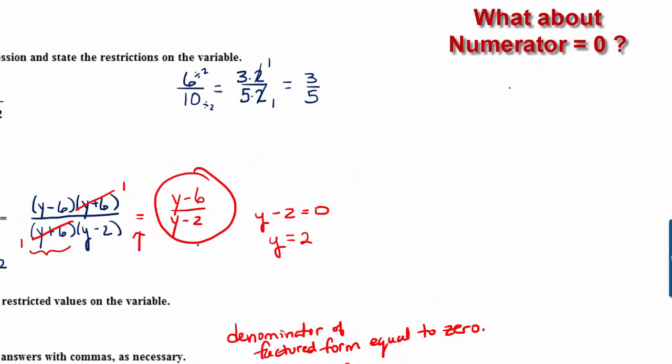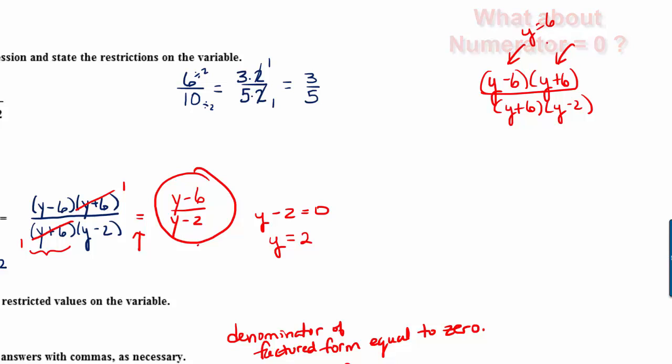As a side note, a common question that I get from students is when they see the expression y minus 6, y plus 6 over y plus 6 times y minus 2, they want to set each factor equal to 0. So they often ask me, why is it not the case that y equals 6 is a restricted value? And that's a very good question. The reason is because y equals 6 makes the numerator equal 0.